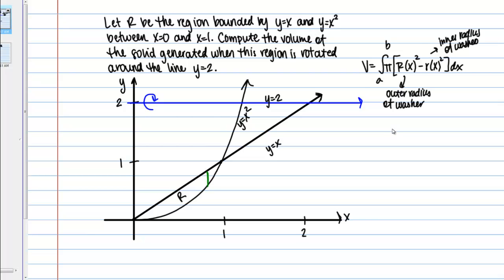In our region R, let's draw some little rectangles. You can think of rotating these rectangles around the line y equals 2 and think about what shape is going to be formed. We're going to have this washer shape — a circular disc with a hole in the middle. Basically, when we rotate this region as a whole, we're going to have a series of those washers. It's just like the washer method from before; we're just going around a different axis of rotation.